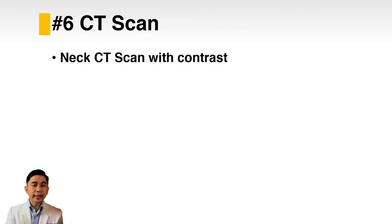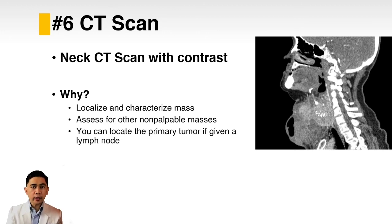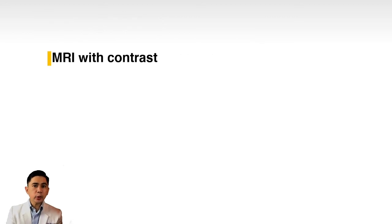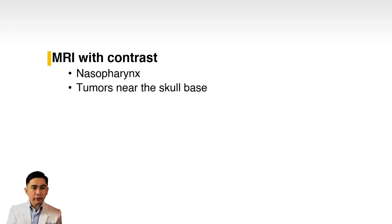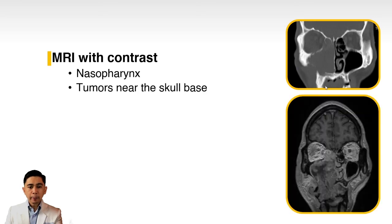Sixth, do a CT scan. It is the best study for neck masses in an adult patient — you should request a neck CT scan with contrast, as a CT without contrast will not give you good information. CT scan will localize and characterize the mass as solid or cystic, assess for other non-palpable masses, help locate the primary tumor while assessing lymph nodes, and can be used for surgical planning. MRI with contrast is considered when dealing with tumors of the nasopharynx or near the skull base — nasal cavity or sinonasal tumors. MRI reveals invasion of soft tissue near the orbit and skull base that CT may miss.